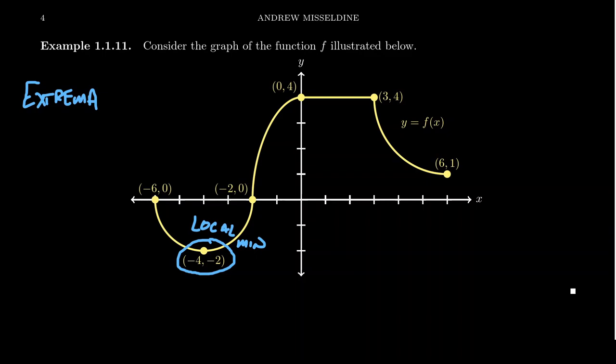The point (−6, 0) will also be a local extremum — this is an example of a local maximum. In that neighborhood, no y-coordinate gets bigger than at (−6, 0). That's kind of cheating, because the point is on the boundary of the domain of the function, making it easy to be the biggest. If you're a boundary point on the left and the function is decreasing, you'll automatically be a local max. With (−4, −2), we see it's a minimum because the function was decreasing and then switched to increasing — that change in monotonicity gives us a local extremum.